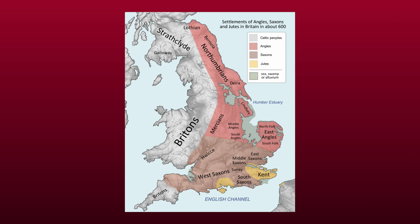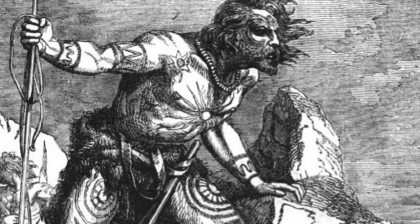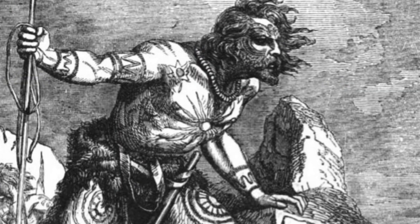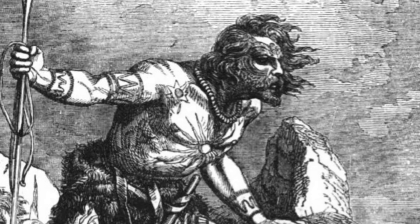England at that point was made up of a variety of peoples and cultures, including the Celtic Britons and the influence from the Roman period. The first thing to note is that the Anglo-Saxons were initially invited by the Britons to defend them against groups such as the Picts and the Scoti.